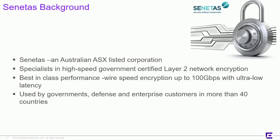A little background on Senatus: they are an Australian company that specializes in high-speed government-certified layer 2 encryption. They are very agile and nimble at it — best-in-class wire speed encryption up to 100 gigabits per second, and I believe they are actually working on 400 gig now. Ultra low latency — we'll have specifics on that. They are used by governments, defense agencies, and large enterprise customers, particularly finance, in more than 40 countries across the globe.